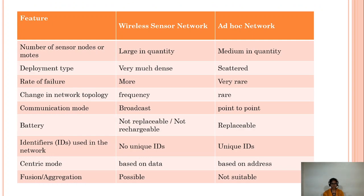This table describes the differences between ad hoc networks and sensor networks. The number of sensor nodes is large compared to ad hoc networks. Deployment type in sensor networks is very dense, whereas in ad hoc networks it is sparse. Rate of failure is higher in sensor networks and rare in ad hoc networks. Topology change is frequent in sensor networks and rare in ad hoc networks. Communication mode in sensor networks is broadcast, whereas point-to-point is used in ad hoc networks. Batteries in sensor networks are not rechargeable or replaceable, while ad hoc network batteries are replaceable. Sensor networks have no unique IDs, whereas ad hoc networks require unique IDs. Sensor networks are data centric; ad hoc networks are address centric. Fusion and aggregation is possible in sensor networks but not suitable in ad hoc networks.